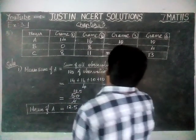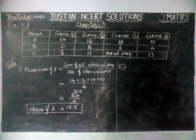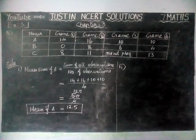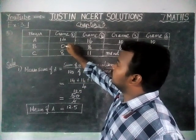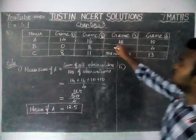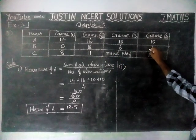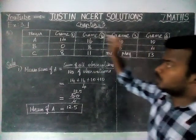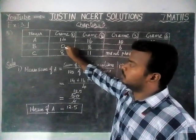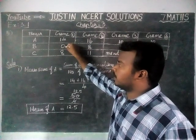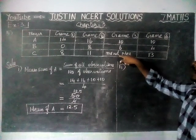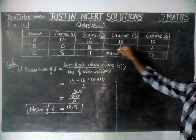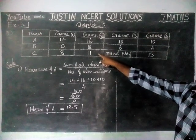2nd question: to find the mean number of points per game for C, would you divide the total points by 3 or by 4? For player B, 4 matches were played, but in 1 match he got 0 — this will still be considered as played. But for player C, in the 3rd match he did not play, so this match will not be considered. Therefore, we have to find the mean by dividing by 3.